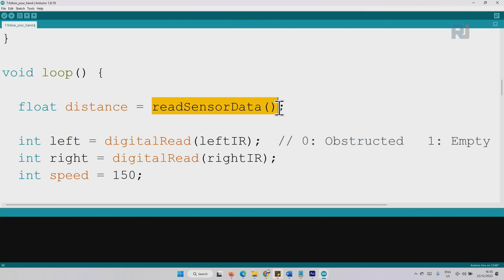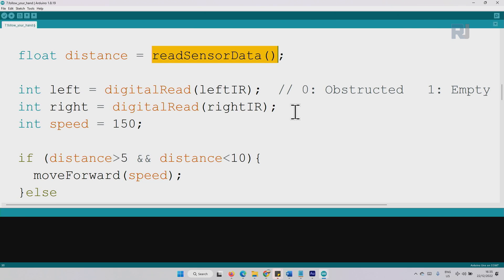Inside the loop we are reading the distance using read sensor data. This is exact code from the previous lesson. These are also the same code from infrared where we get the distance using this function, and using these two we are getting the left and right detection of obstacle. If it is obstructed, if the hand is there, we will read zero. Otherwise it will be empty.